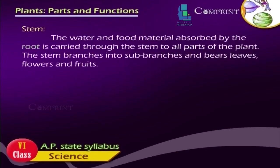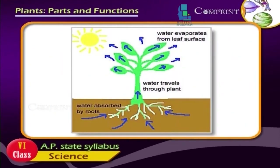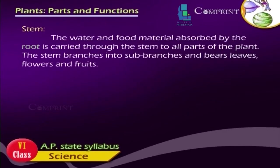Stem. The water and food material absorbed by the root is carried through the stem to all parts of the plant. The stem branches into sub-branches and bears leaves, flowers and fruits.